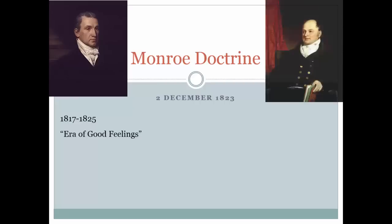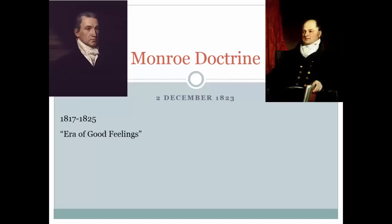John Quincy Adams, the son of President John Adams, was appointed Secretary of State, the person responsible for America's international relations. Monroe could not have selected a more capable person for the role. Just two years earlier, Adams had successfully negotiated the Treaty of Ghent, the treaty that ended the War of 1812.